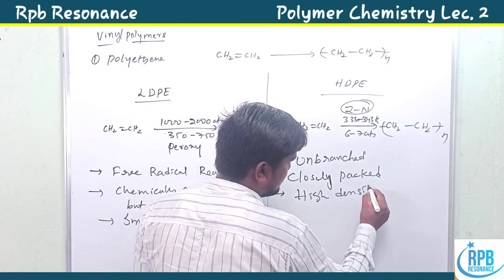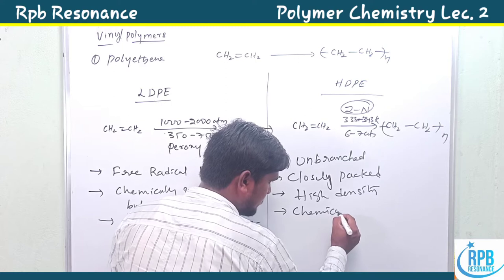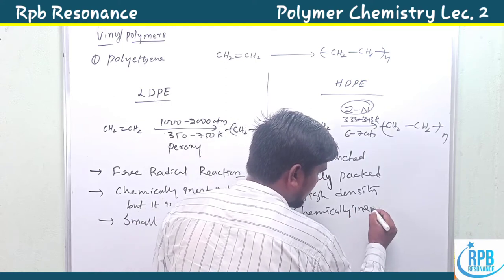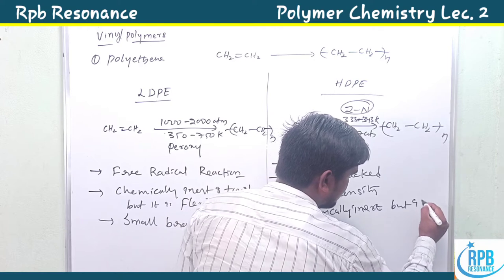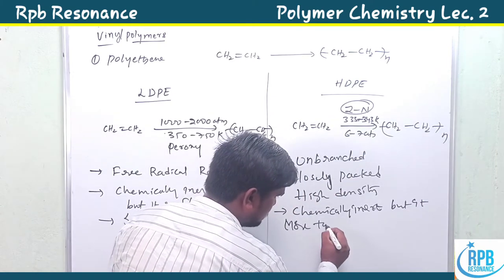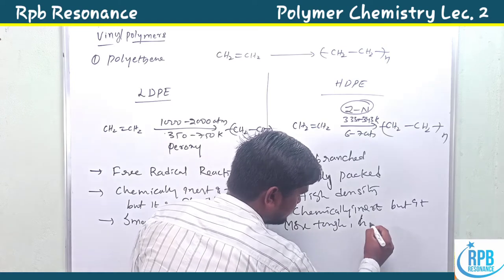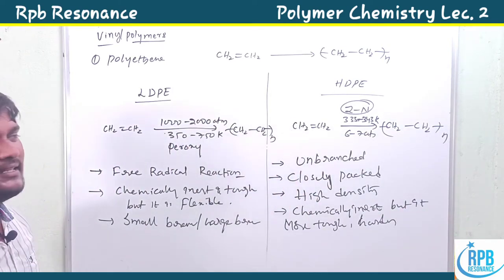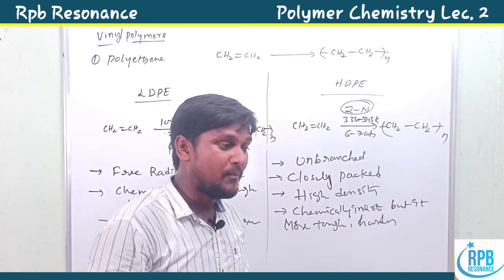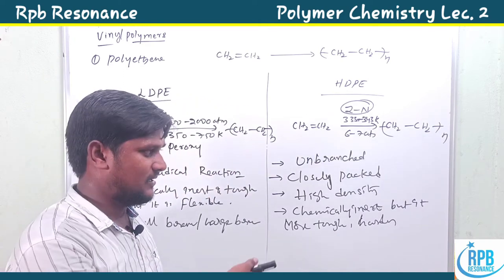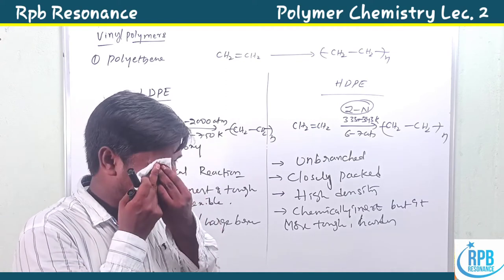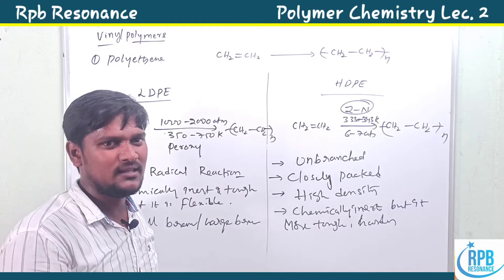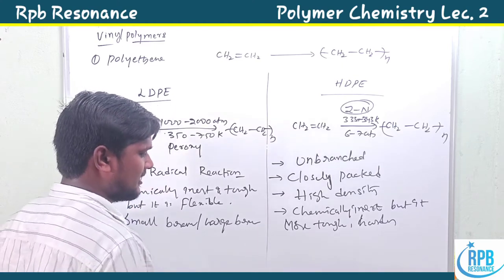HDPE is also chemically inert, but it is more tough and harder than low density polythene. Due to its hardness, it is used for the manufacture of hard materials like pipes and buckets — houseware plastic materials. Both LDPE and HDPE are the two types of polythene.